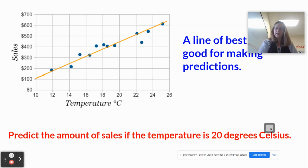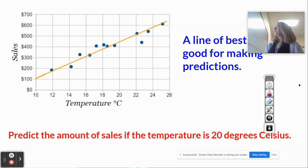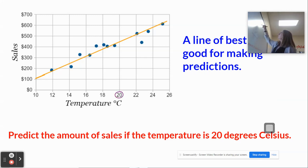And then we use the line as a prediction. So here, predict the amount of sales if the temperature is 20 degrees Celsius. So we can look at 20 degrees Celsius, and we follow it up, and we look at the line. Now, once you draw the line of best fit, those blue points become insignificant. They have no value anymore. We just look at the line of best fit, and then we follow it over. So I predict that my sales would be approximately $425 in that range.